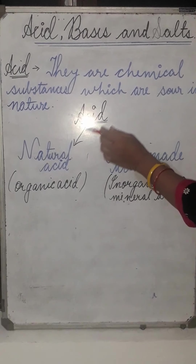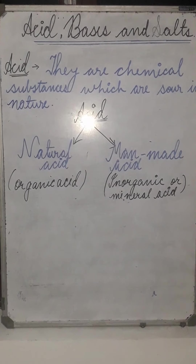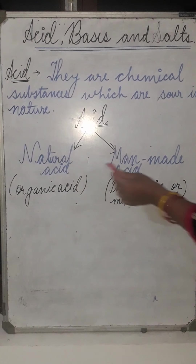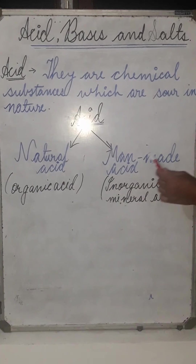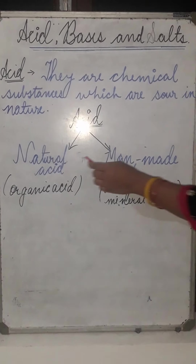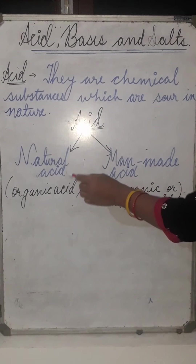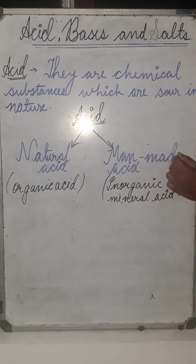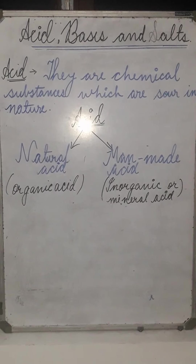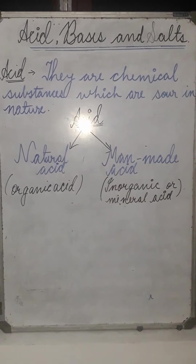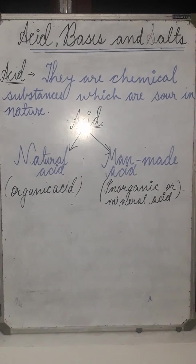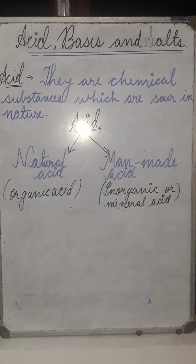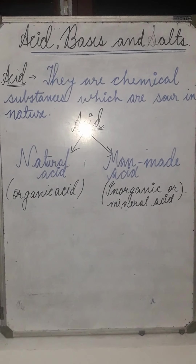Acids are divided into two groups according to their occurrence: natural acid and man-made acid, also called organic acid and inorganic acid. Natural acids are found in nature and man-made acids are prepared in labs.